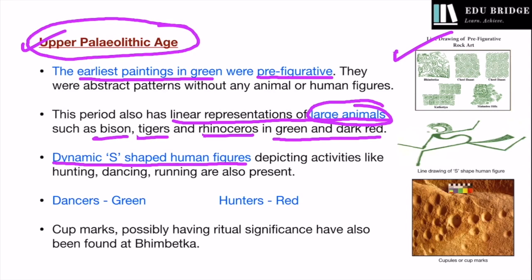Human beings have been shown in dynamic S-shaped figures, which usually denoted motion — either running, dancing, or hunting. Dancers have been shown in green, and hunters have been depicted in red color. You must remember this: dancers are shown in green, and most hunters are shown in red.